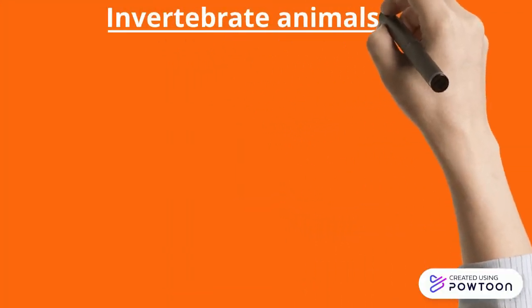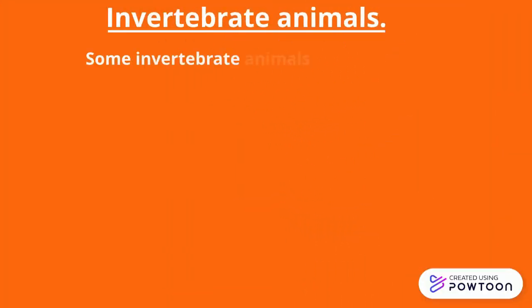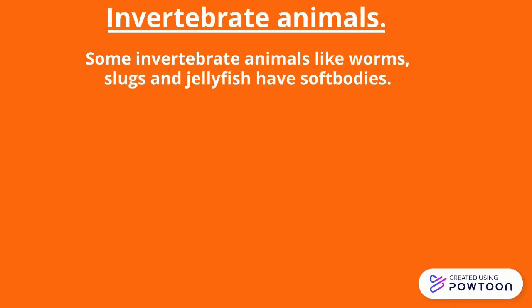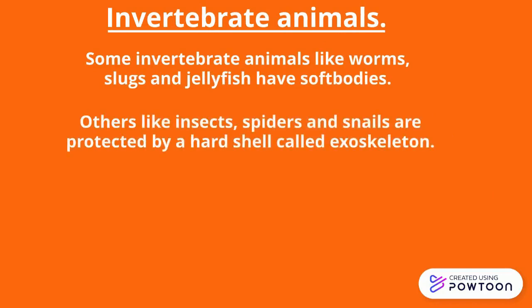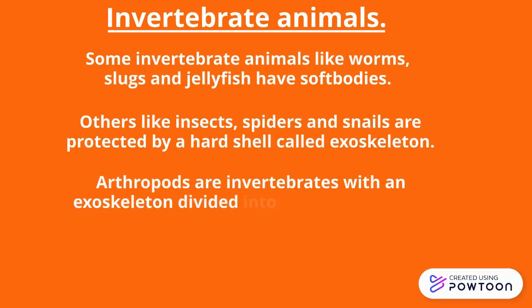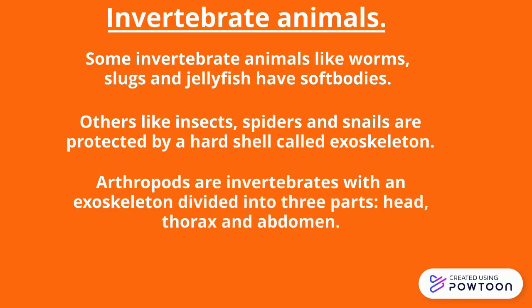Invertebrate animals: some, like worms, slugs, and jellyfish, have soft bodies. Others, like insects, spiders, and snails, are protected by a hard shell called an exoskeleton. Arthropods are invertebrates with an exoskeleton divided into three parts: head, thorax, and abdomen.